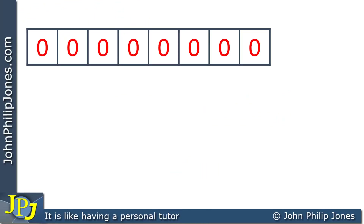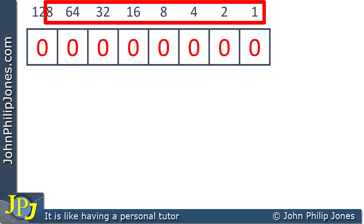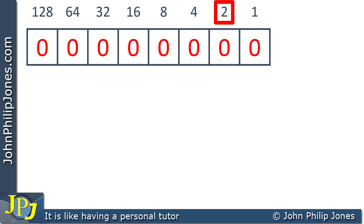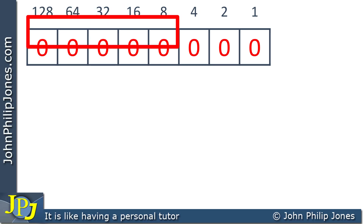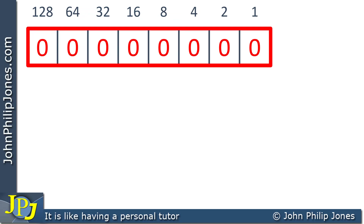Let's now consider a byte — eight flip-flops all together, each with a zero. The position values are 1, 2, 4, 8, 16, 32, 64, and 128. Each place value doubles the previous one. Since there is a zero in every position, this byte represents the value of zero in our number system.